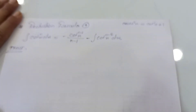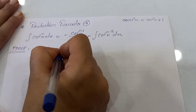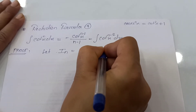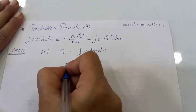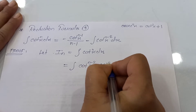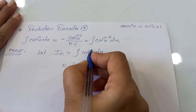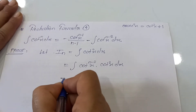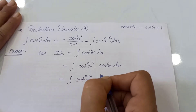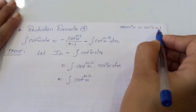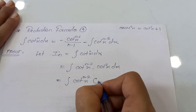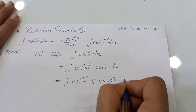Firstly we will prove this formula. We take I_n equals integration of cot raised to n times x dx. We break cot raised to n as cot raised to n minus 2x times cot squared x. Then instead of cot squared, we write its value in terms of cosec: cot squared x equals cosec squared x minus 1.